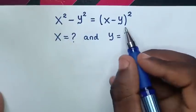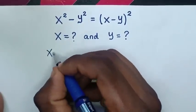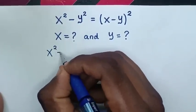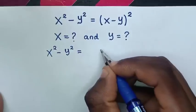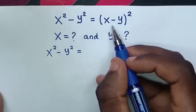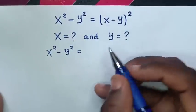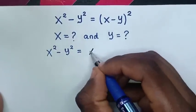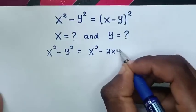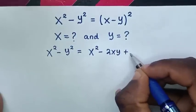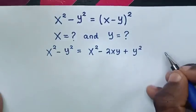So first, from this equation, x squared minus y squared is equal to x minus y bracket squared, which is the same as x squared minus 2xy plus y squared.